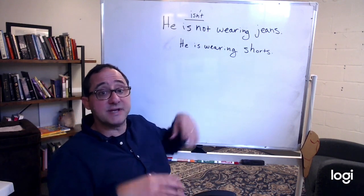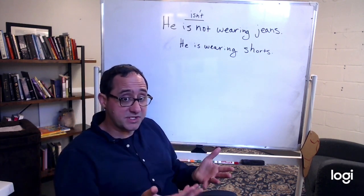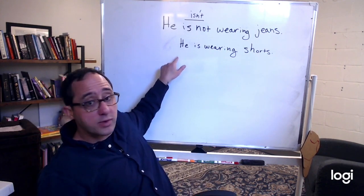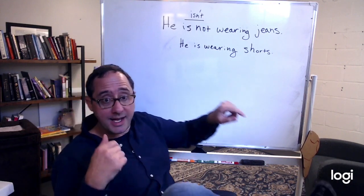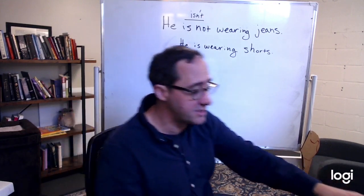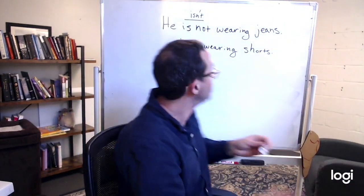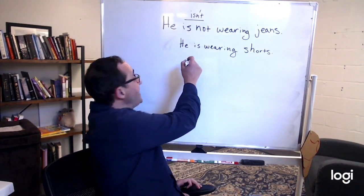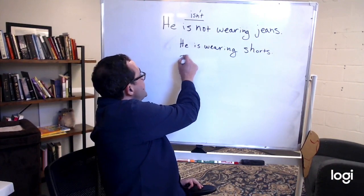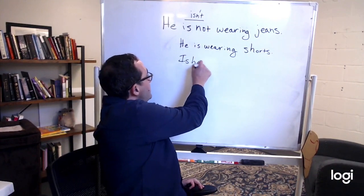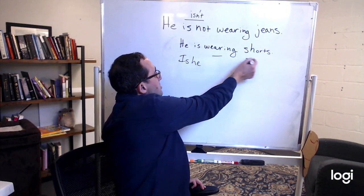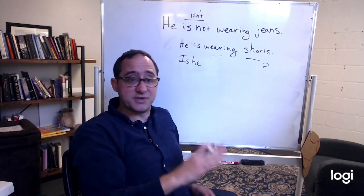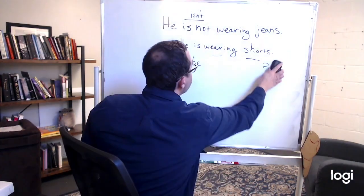Present continuous means something that someone is doing at the time. Remember how to make this negative, how to make a question? We just switch these two around, right? Is he wearing shorts? We just switch those two around.